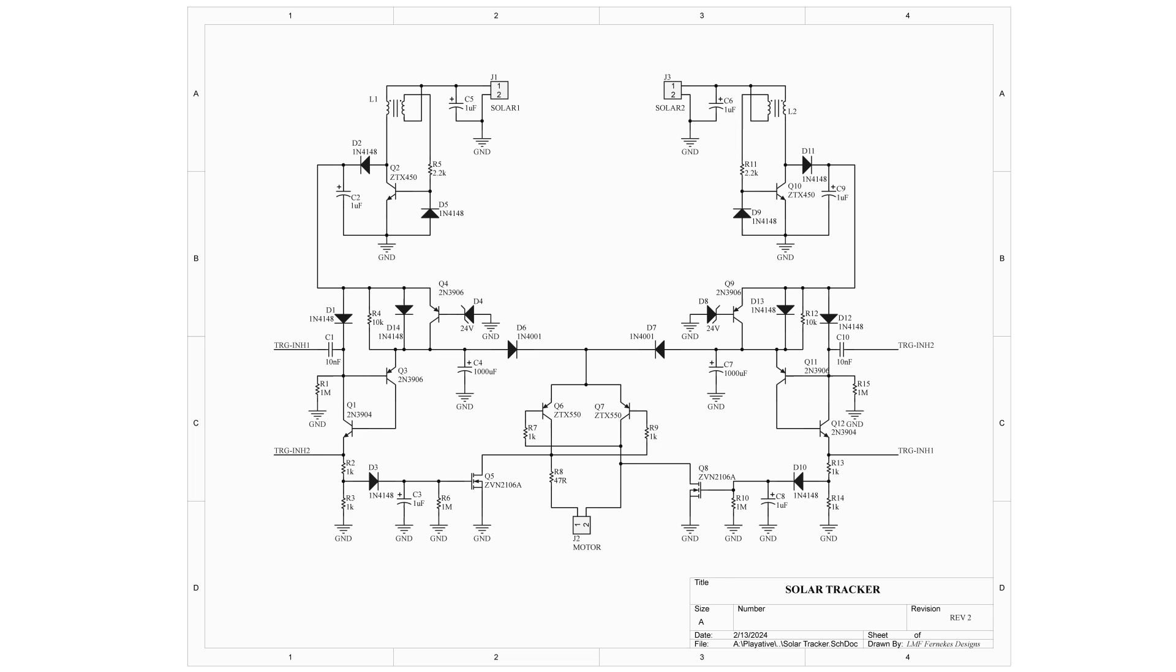One thing you should immediately notice looking at the schematic is the symmetry. We have two connectors for the solar panels at the top and a single motor connector at the bottom. If we take a detailed look at one side of this circuit, the operation of the whole will become very obvious.